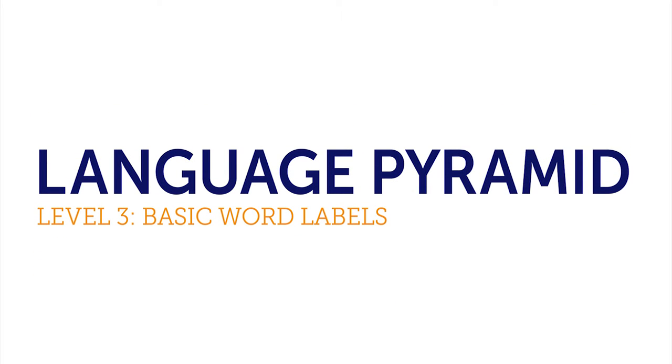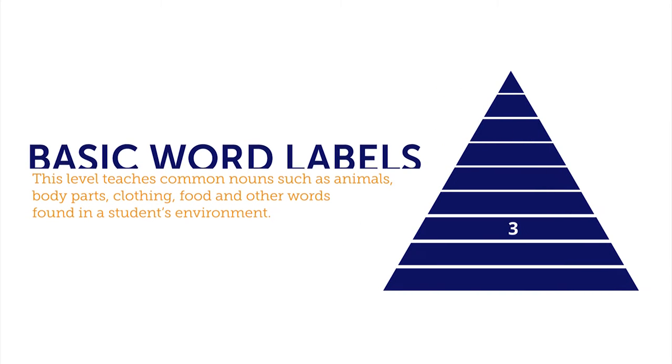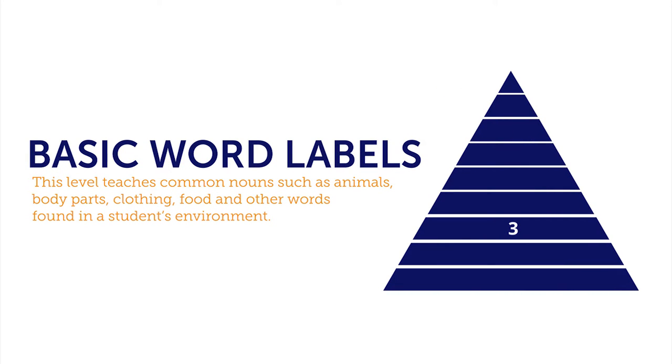Level 3 Basic Word Labels teaches the concrete foundational concepts that objects have names. This level teaches common nouns such as animals, body parts, clothing, food, and other words found in a student's environment.